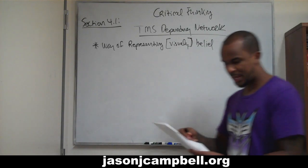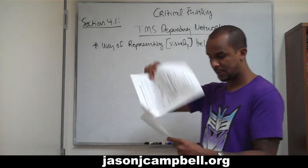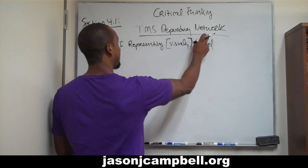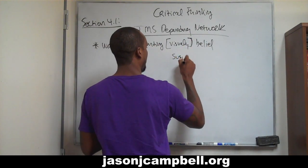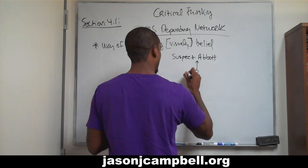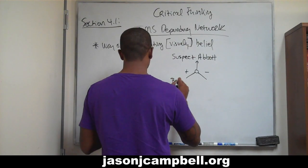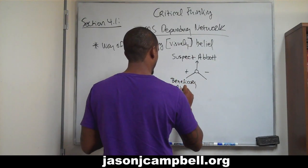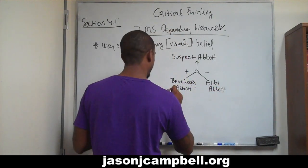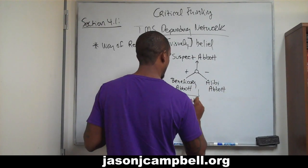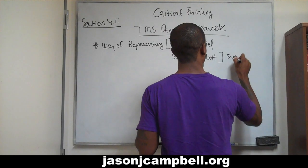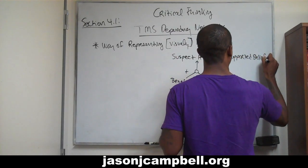On page 15 — and the bottom of 15 and page 16 are the same image, so just flip to page 16 and we'll start there. Let's draw this TMS — Truth Maintenance System Dependency Network. We have 'suspect Abbott' at the top. As noted earlier, we have an arrow going up, a node with plus and minus, 'beneficiary Abbott,' 'alibi Abbott,' an in-list, an out-list, supported belief, and justification. I'll explain all of this.